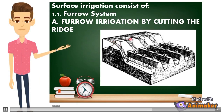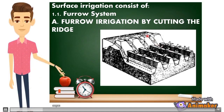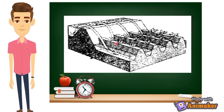In furrow irrigation by cutting the ridge, eto yung mismong ridge na nakaharang. In order for the water to flow on the furrows, kailangan nating hokayin isa-isa. As you can see, meron tayong tatlong falls dyan — that's furrow irrigation by cutting the ridge. Ina-cut natin yung ridge at subdivide lang natin sya depende sa number of furrows na meron sa ating farm.